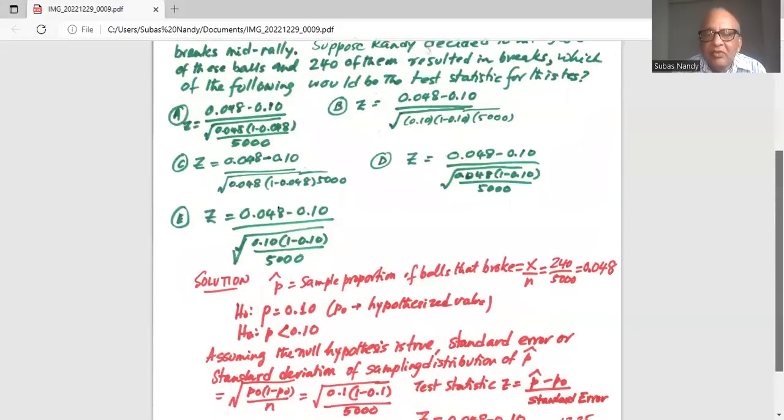The P hat is the sample proportion of balls that break, x over n. 240 of the balls break and he tested 5000 balls. So 240 out of 5000 is 0.048. So null hypothesis P is 0.1 and the alternate hypothesis is P less than 0.1. My P0 or hypothesized value is 0.1.